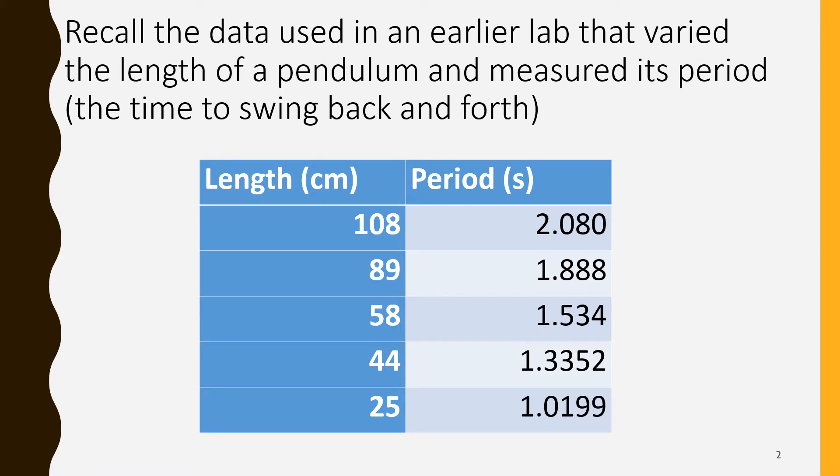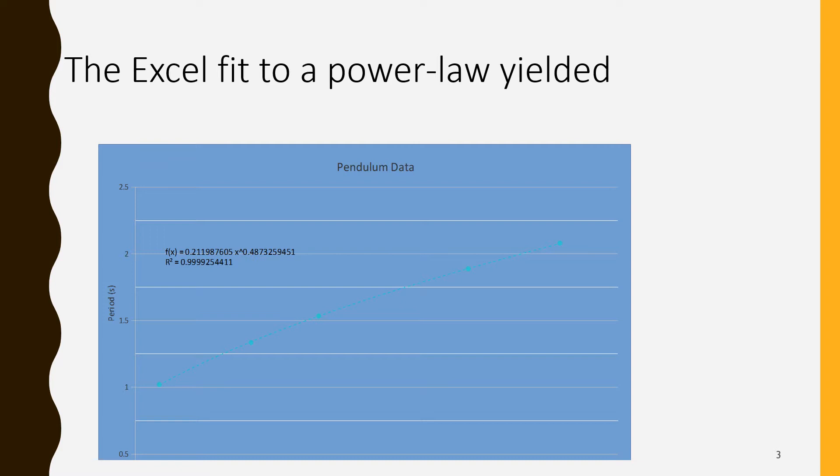We copy this data over to Excel. With that data in Excel we highlight it, we insert an XY scatter graph, we choose quick layout number 9 and right click on the fit and decide to format the trend line and choose a power.